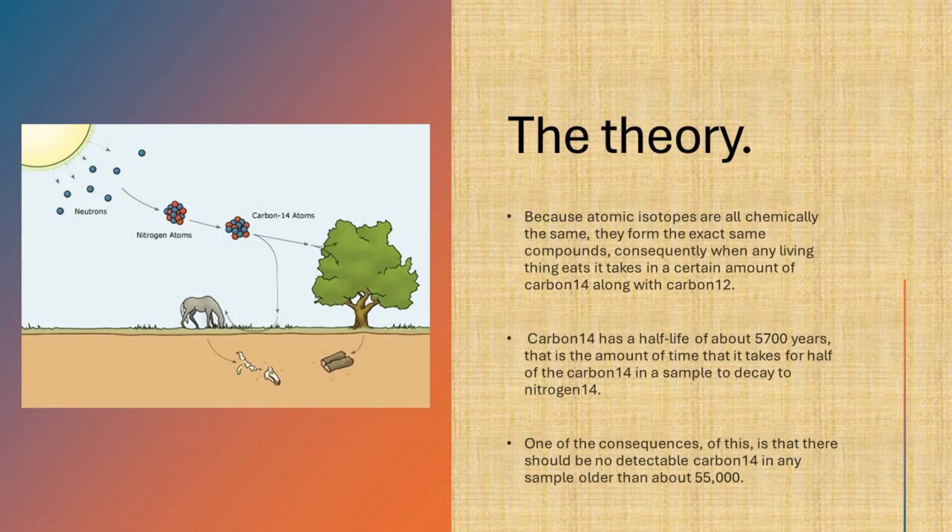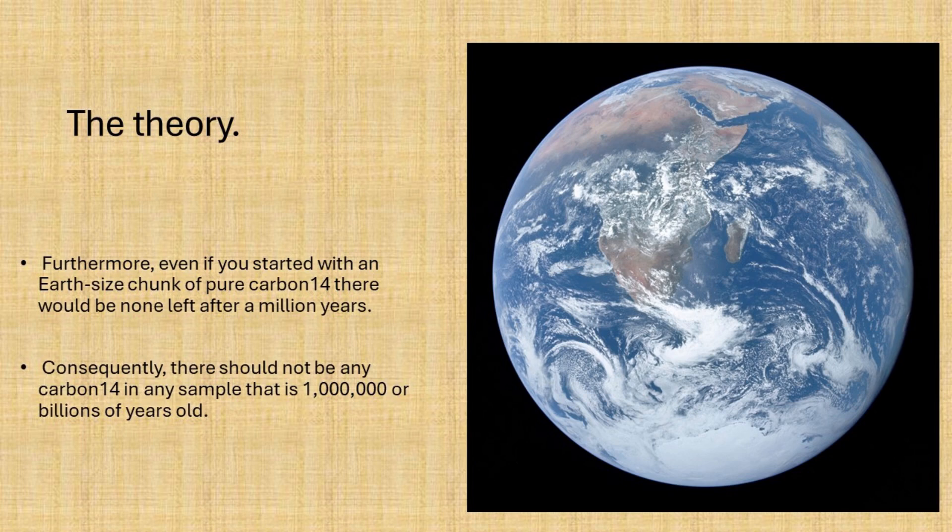One of the consequences of this is that there should be no detectable carbon-14 in any sample older than about 55,000 years. Furthermore, even if you start with an Earth-sized chunk of pure carbon-14, there would be none left after a million years. Consequently, there should be no carbon-14 in any sample that is a million or a billion years old.